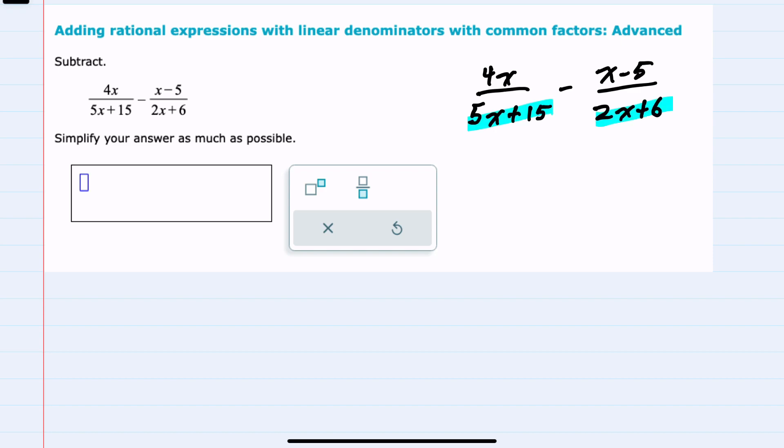With these two denominators I would first want to factor each one as much as possible to identify a common denominator. Starting on the left-hand side, I can see that each of these terms have a common five that can be factored out.